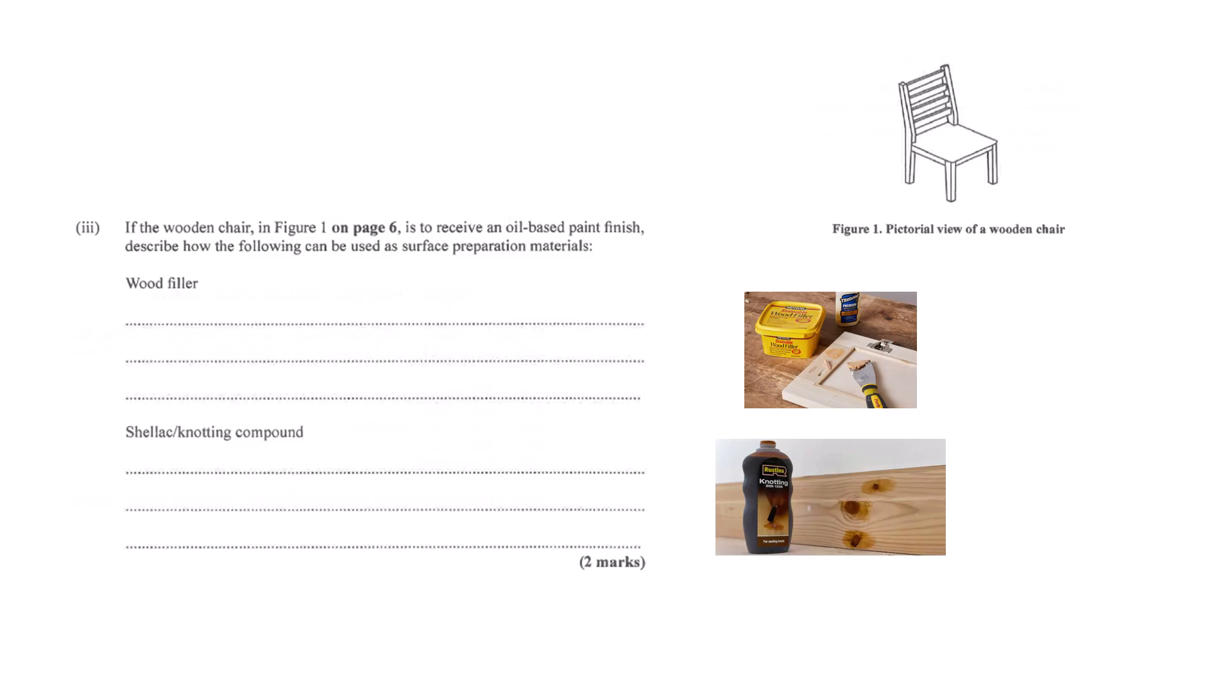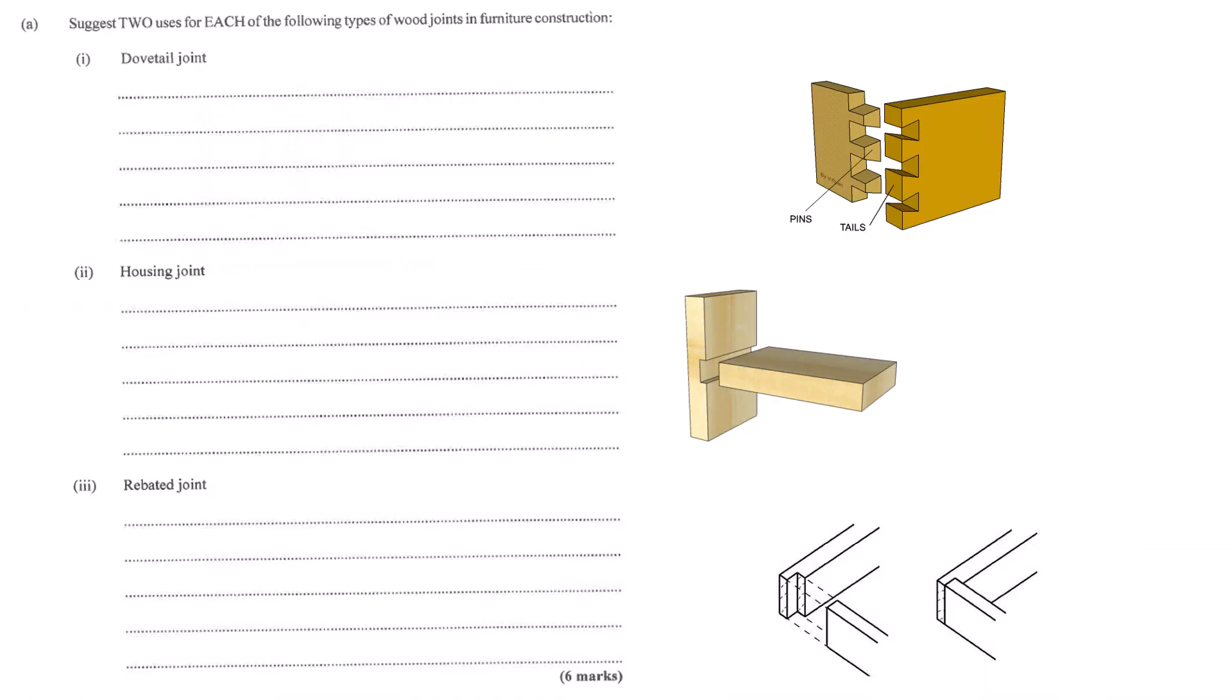So our wood is perfectly prepped. Now the fun part - joining pieces together. Let's talk joints. There seem to be loads. How about we start with a classic, the dovetail joint, the one with the interlocking pins. It looks a bit like a row of dovetails, hence the name. It's incredibly strong, especially against being pulled apart. That's why you see it so often in drawer construction, for the drawer fronts and sides. Also used for corners of boxes and cabinets. It's strong and looks quite attractive too, a sign of quality craftsmanship.